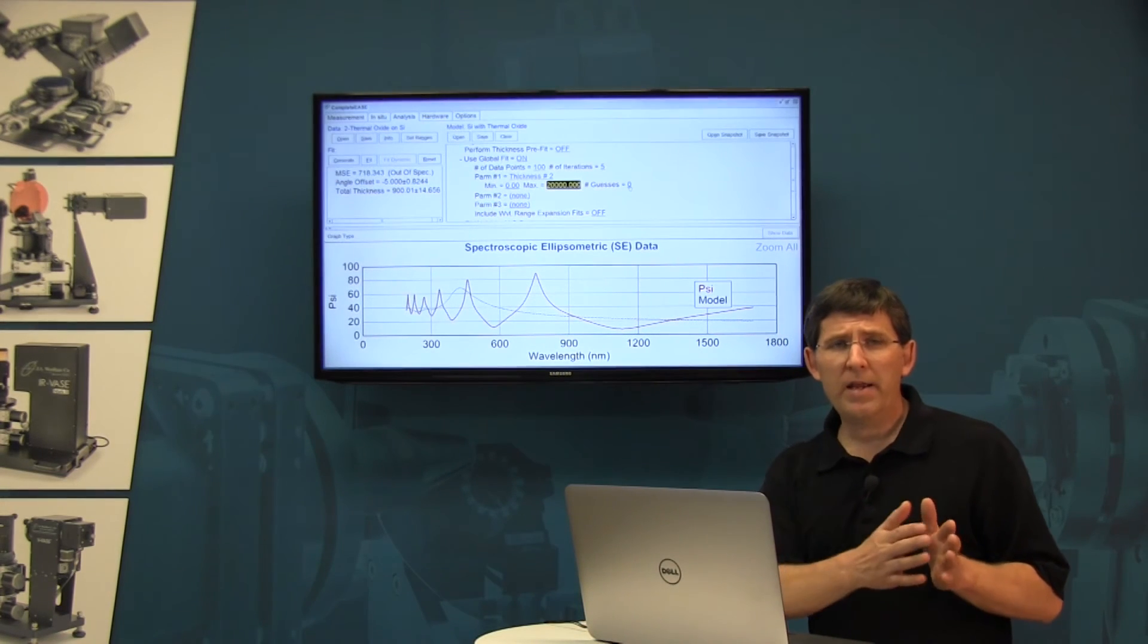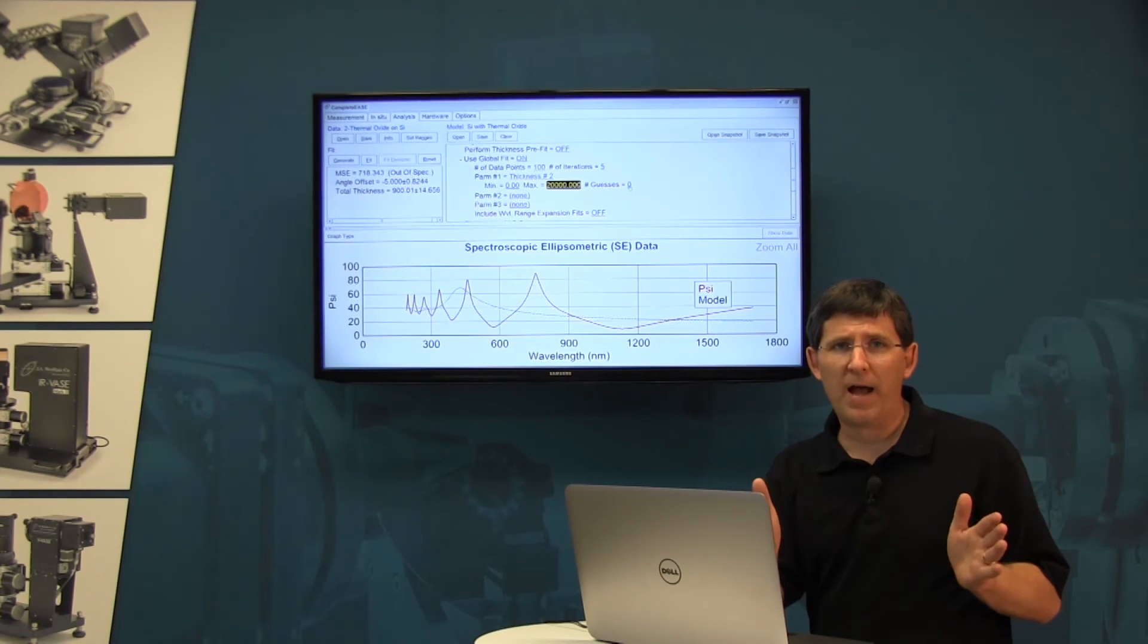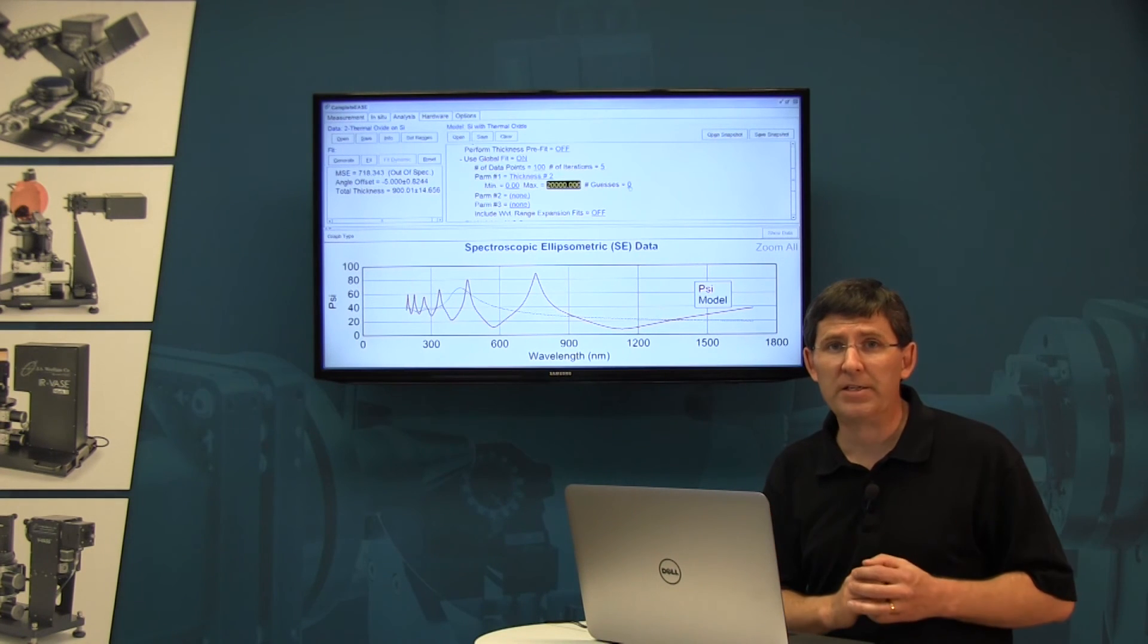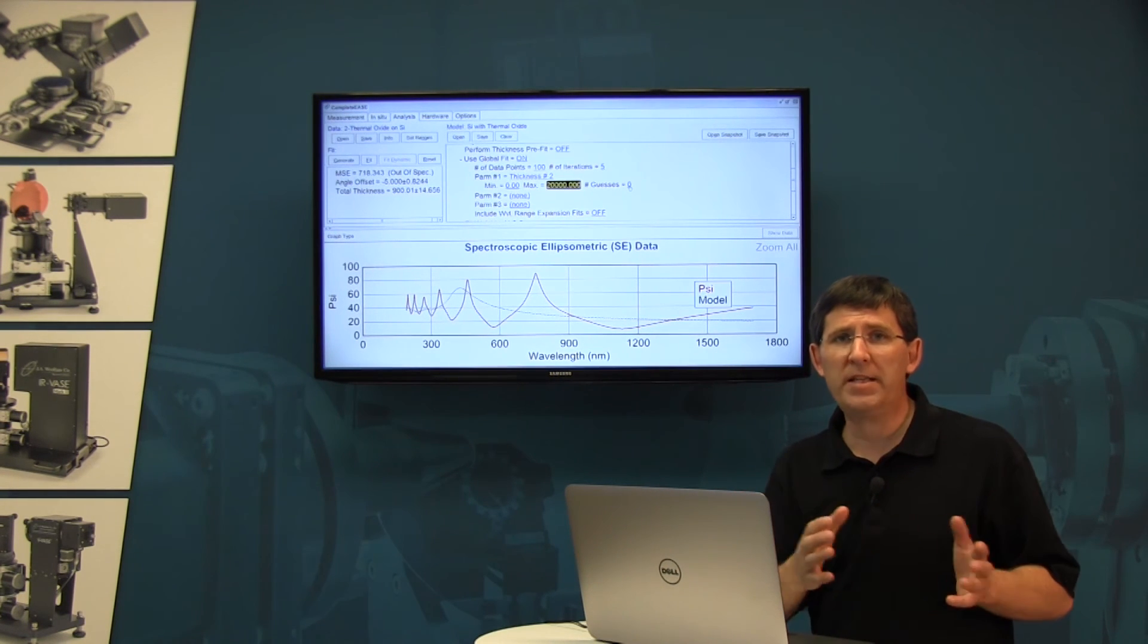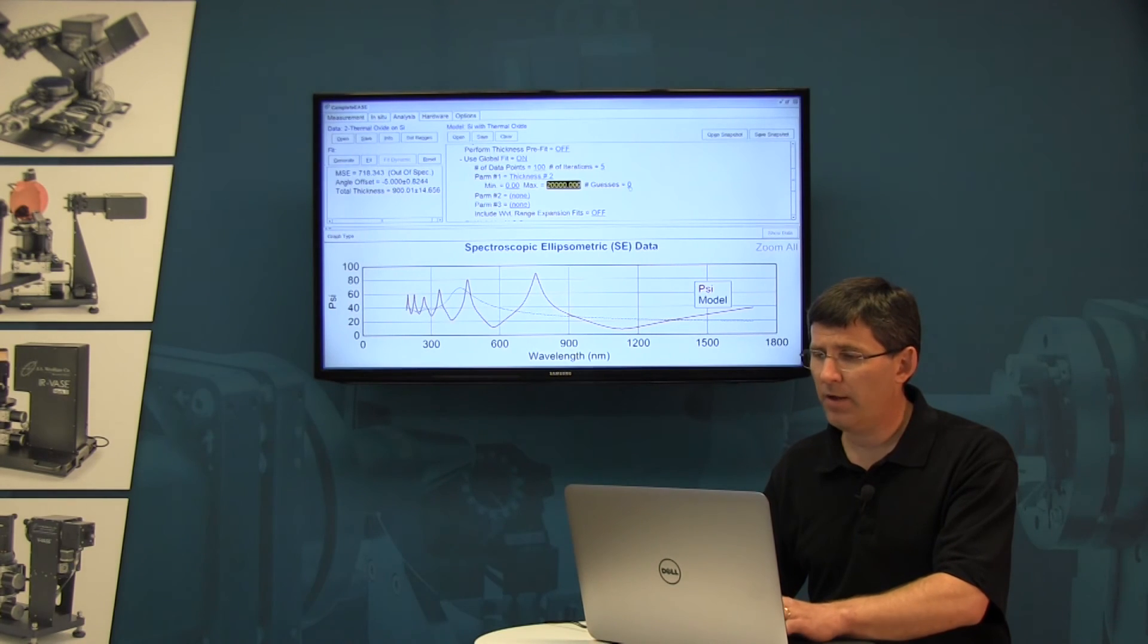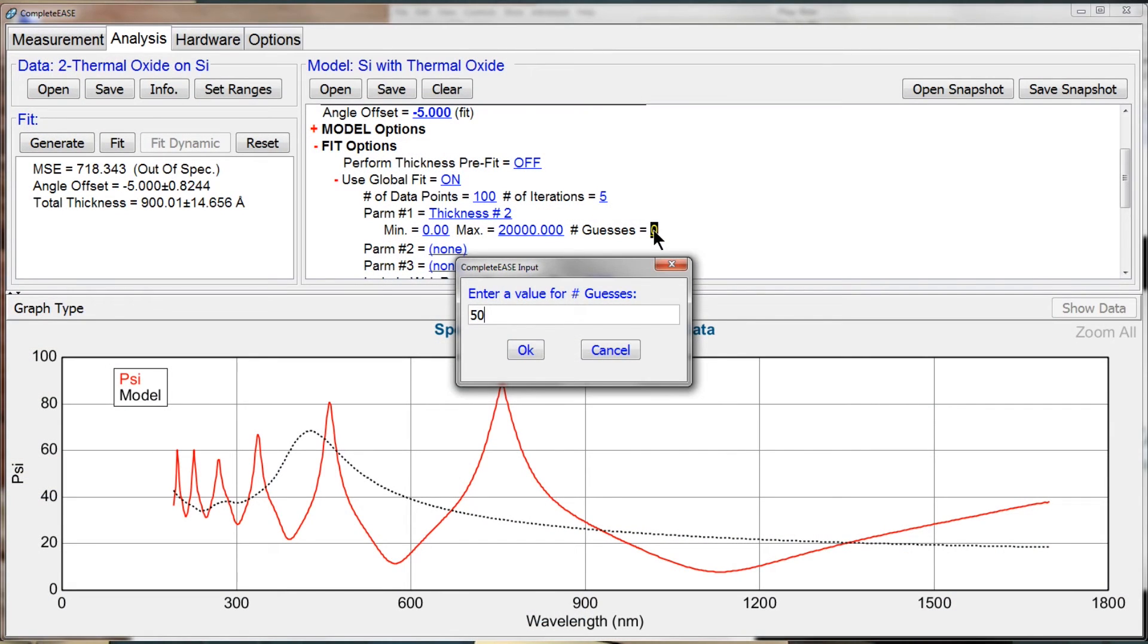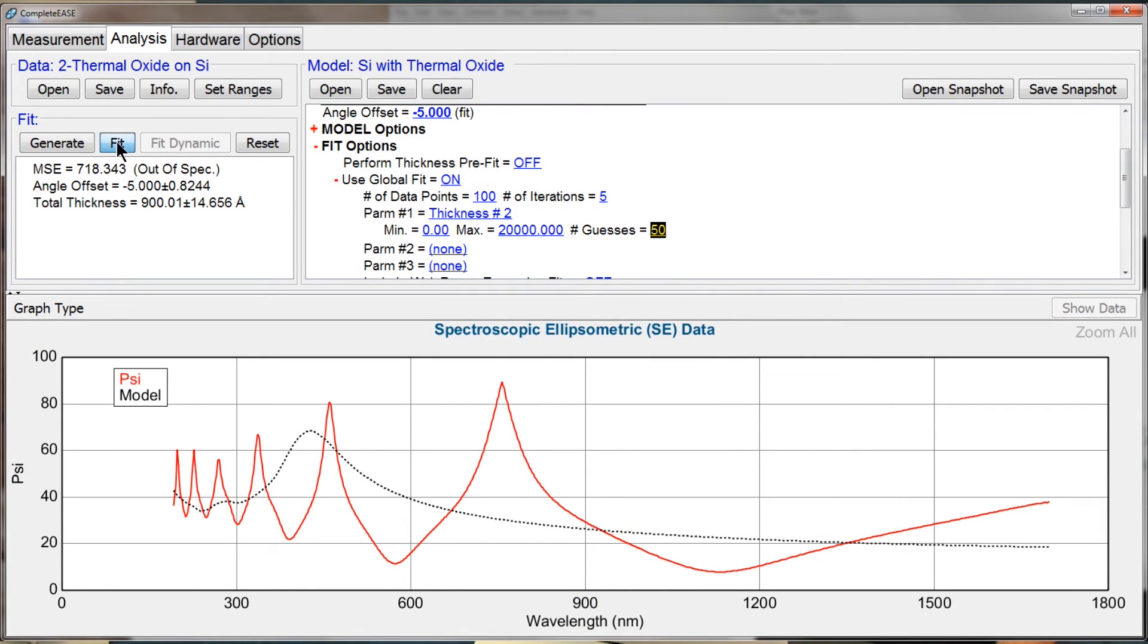The number of guesses is how it's going to equally divide up this range of thicknesses and then it's going to search what is the MSE at each one of those values. Let me type in 50 global guesses and press fit.